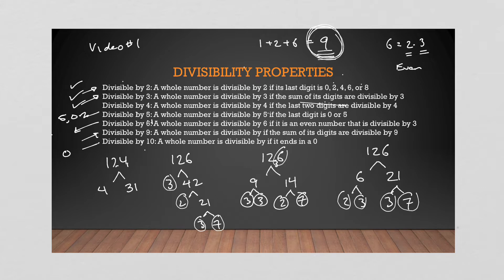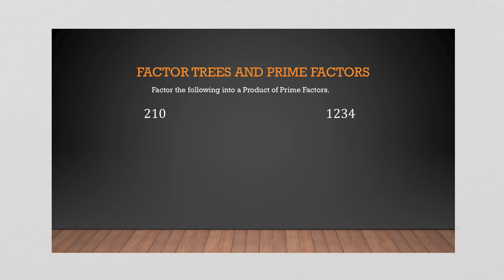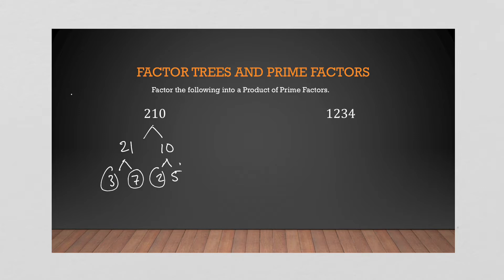So what's the point? We're going to use this for lowest common multiple and greatest common factor. Let's look at 210 — it ends in zero, so it's divisible by 10. That gives me 21 and 10. 21 is 3 times 7, and 10 is 2 times 5. So 210 equals 2 times 3 times 5 times 7. That is what we call a prime number factorization.